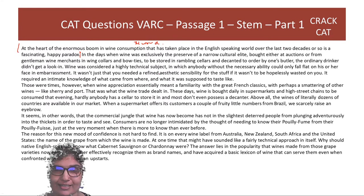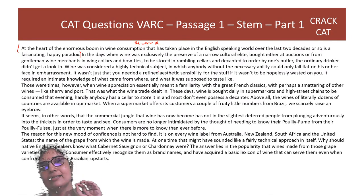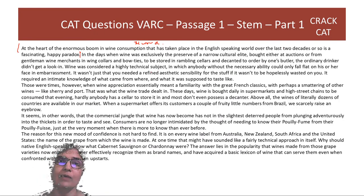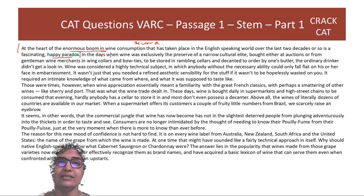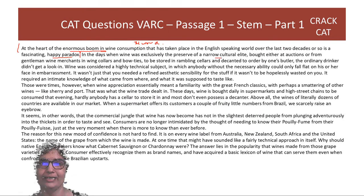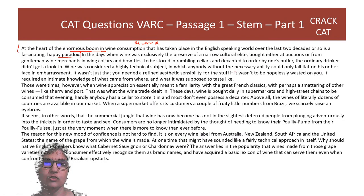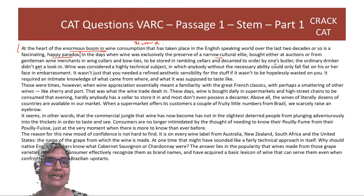The PDF is in the description box — please download it and follow along. Focus on how to read faster and pick up the ideas behind each sentence. In the days when wine was exclusively the preserve of a narrow elite, bought at auctions or from gentlemen wine merchants, to be stored in rambling cellars, the ordinary drinker didn't get a look in.